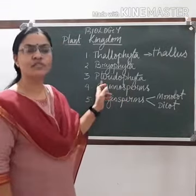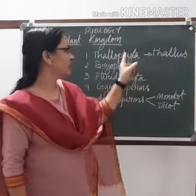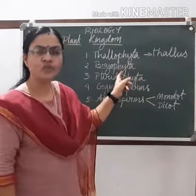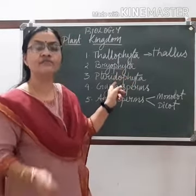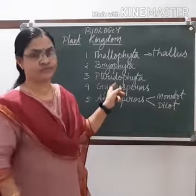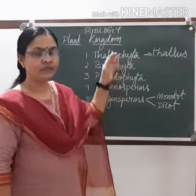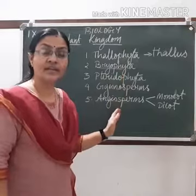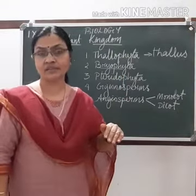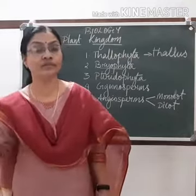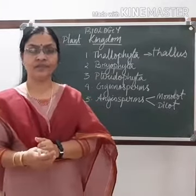The next group is Pteridophyta. In Bryophyta they have root-like and stem-like parts, but when it comes to Pteridophyta, they have true roots, stems, and leaves. This shows how gradual development is taking place in living organisms, leading to evolution and the origination of new organisms.